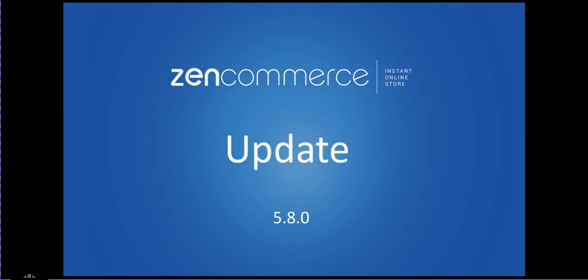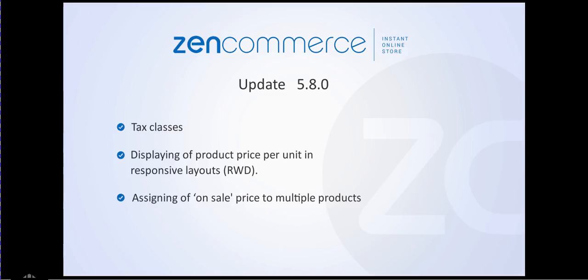The three new features are: Text Classes, displaying of product price per unit in responsive layouts, and assigning of on-sale price to multiple products.